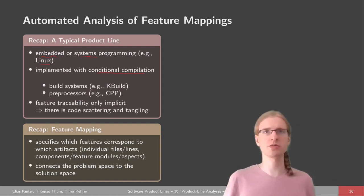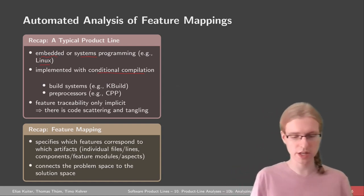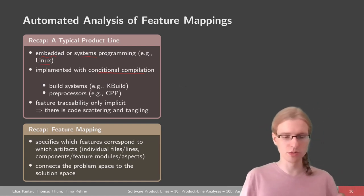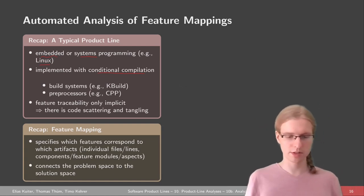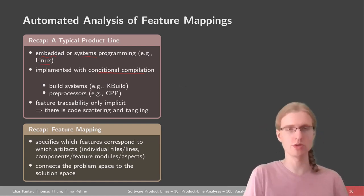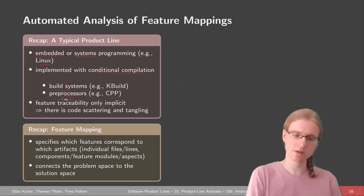The typical example would be the Linux kernel, where we have 10,000 to 20,000 features, which are all implemented basically with the same technique: conditional compilation. Conditional compilation, which we talked about in the fifth lecture, consists of two big parts — two tools which we usually use: first of all, the build system and also the preprocessor.